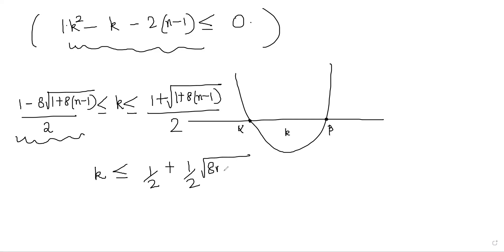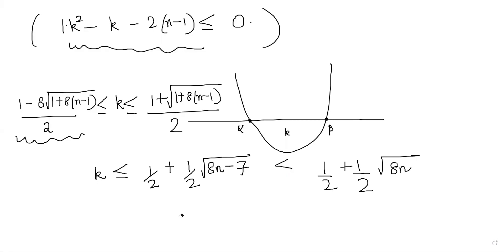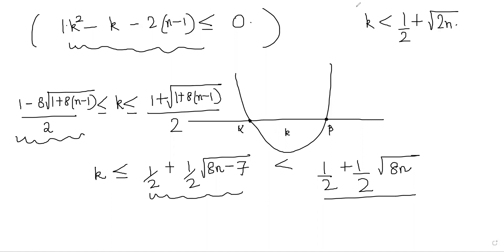The left root is negative and k is a positive number, so we only care about the upper bound. We get k is less than one half plus one half times the square root of 8n−7, which is strictly less than one half plus one half times the square root of 8n. Simplifying, the square root of 8n over 2 equals the square root of 2n, giving us k is less than one half plus the square root of 2n — exactly what we wanted to prove.